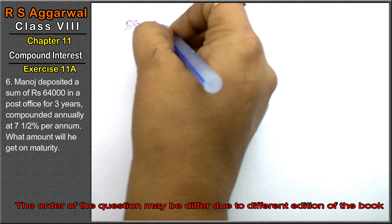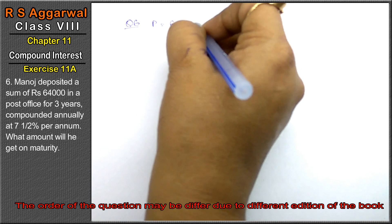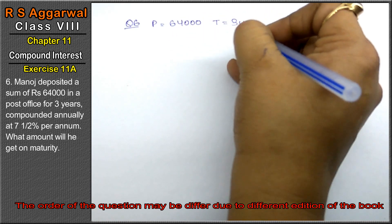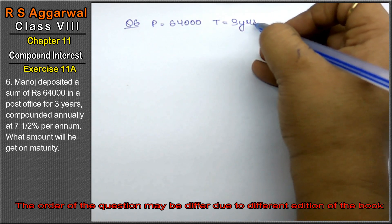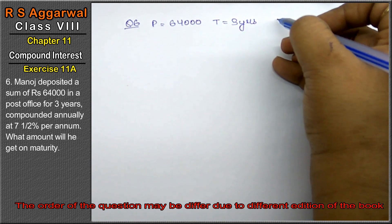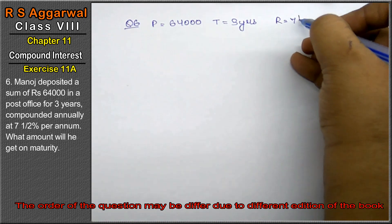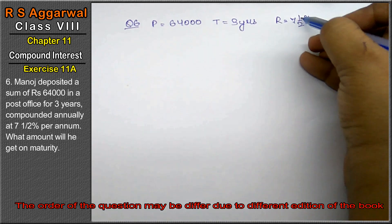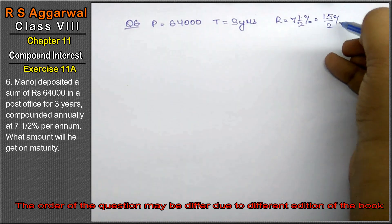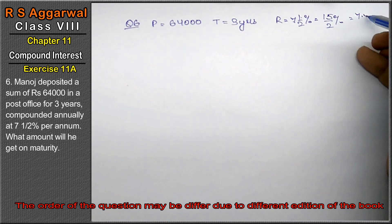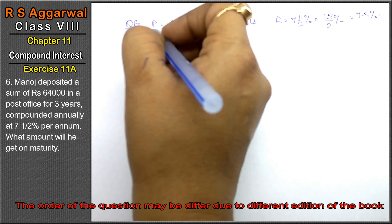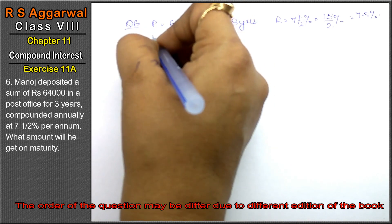Question number 6: Manos deposited a sum of rupees 64,000 — principle is 64,000 — in a post office for three years. Time is 3 years, compounded annually at a rate of 7 and a half percent, that is 15 upon 2 percent, or 7.5 percent. Now, what amount will he get on maturity?